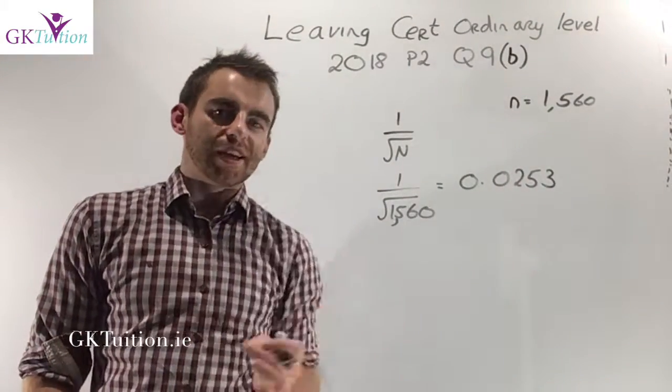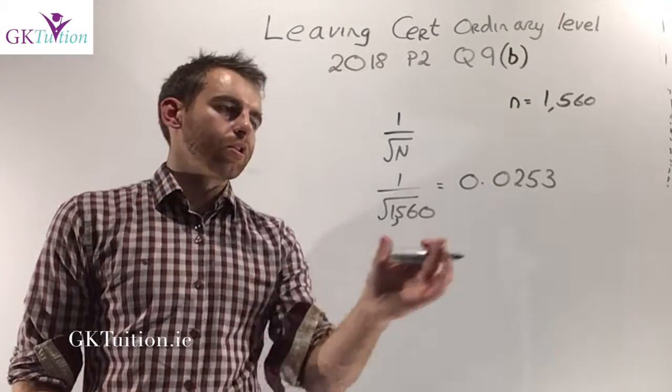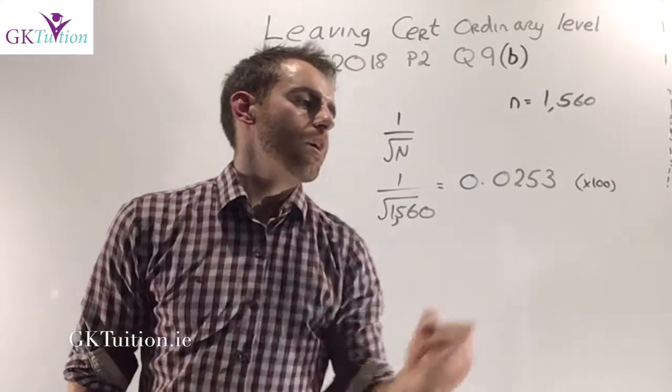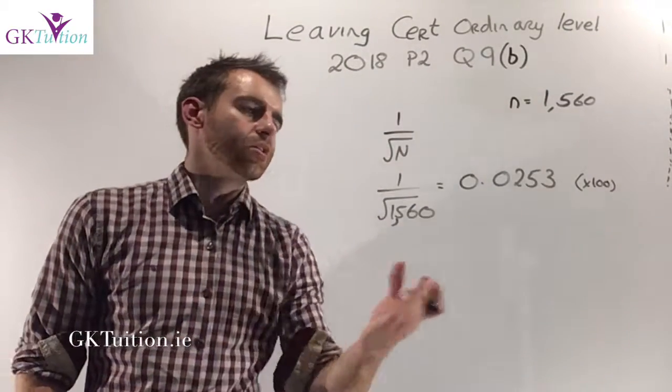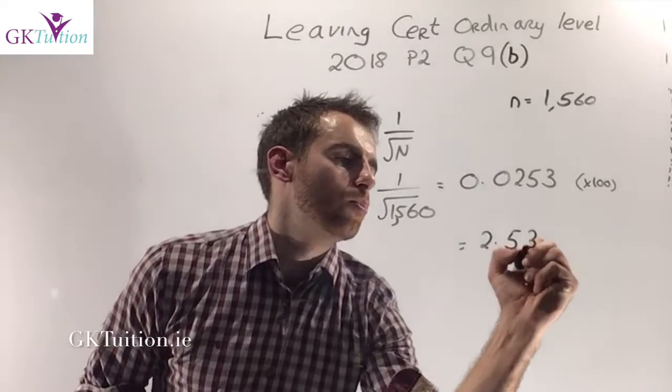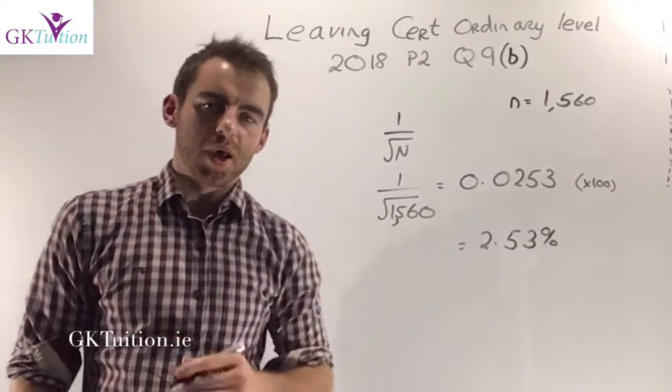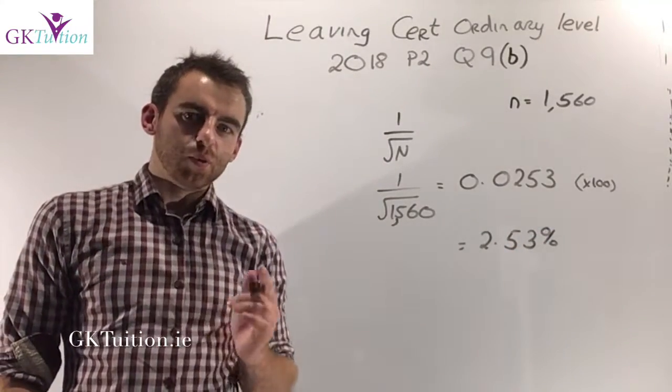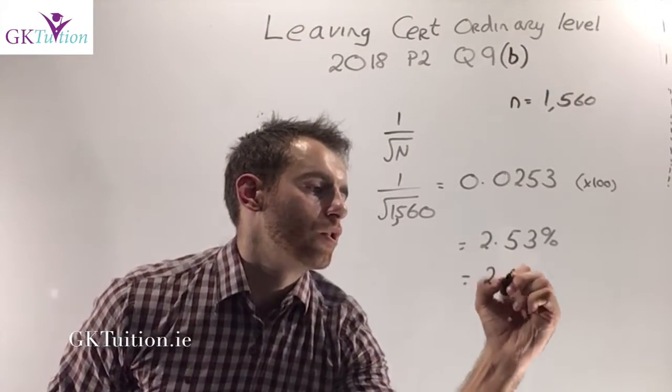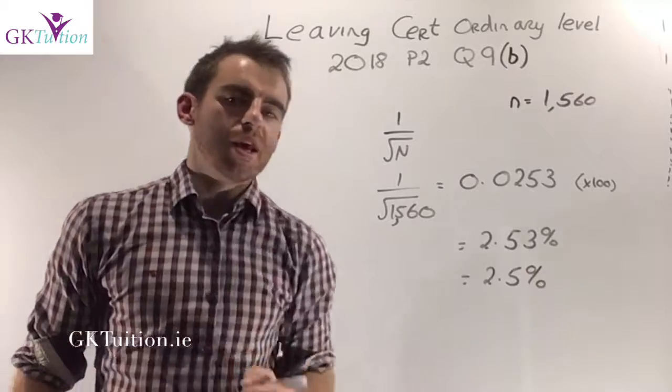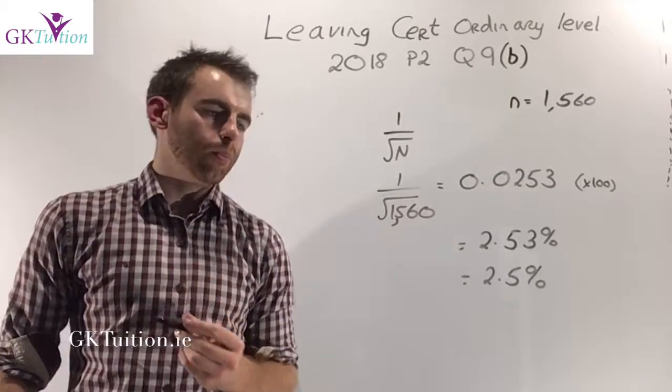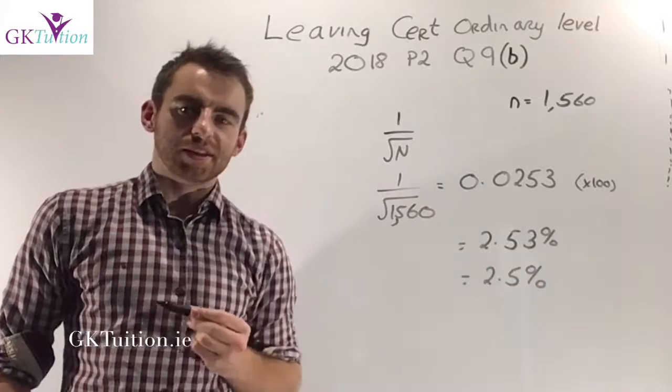Obviously this is a decimal, not a percentage. To convert a decimal to a percentage we need to multiply by 100. When you multiply by 100 you're essentially just moving the decimal place two places, so that corresponds to 2.53%. The question asked us to leave it to one decimal place so our final answer is 2.5%.